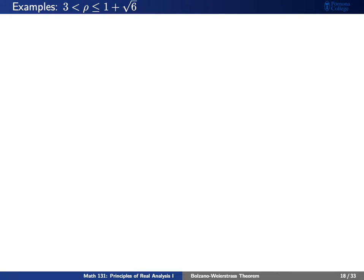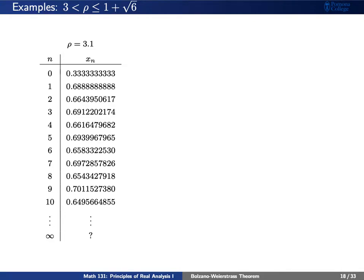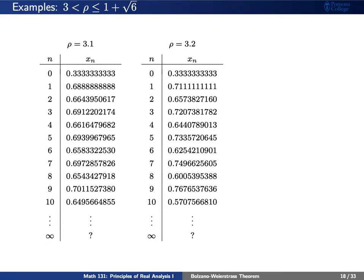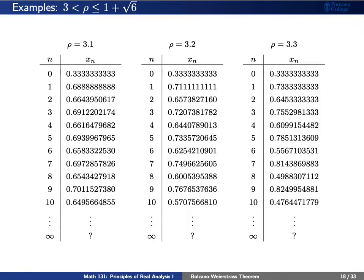Let's increase rho a little bit more. Rho here will be between 3 and roughly 3.4, that is 1 plus the square root of 6. Starting with rho equal to 3.1 and x sub 0 equal to 1 third, by looking at the first 10 terms we really don't see a pattern. Increasing rho to 3.2 or to 3.3 with x sub 0 equal to 1 third, we again don't see an obvious pattern by looking at the first 10 terms. So instead, let's take a look at further out in the sequences.